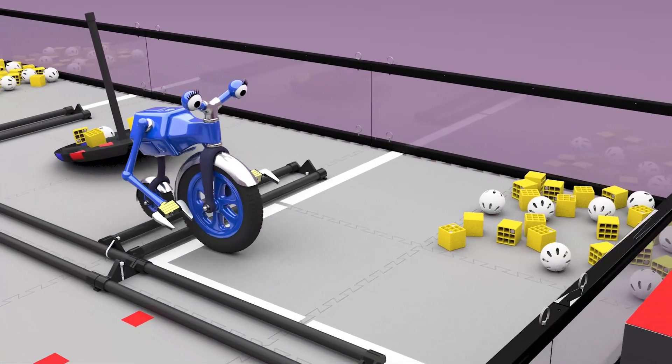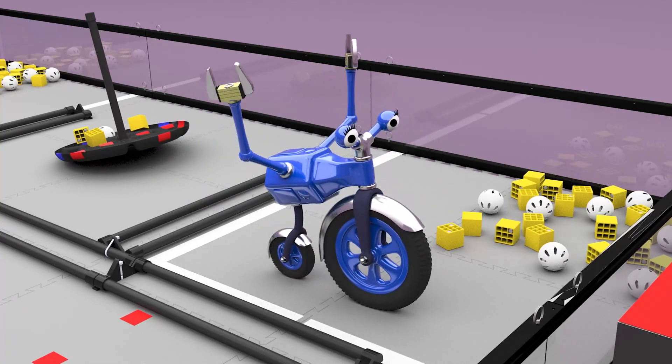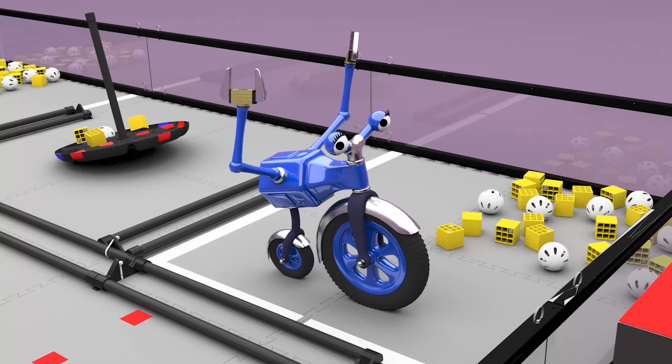Robots parked in a warehouse earn three points. However, if the robot is parked completely in the warehouse, it earns six points.